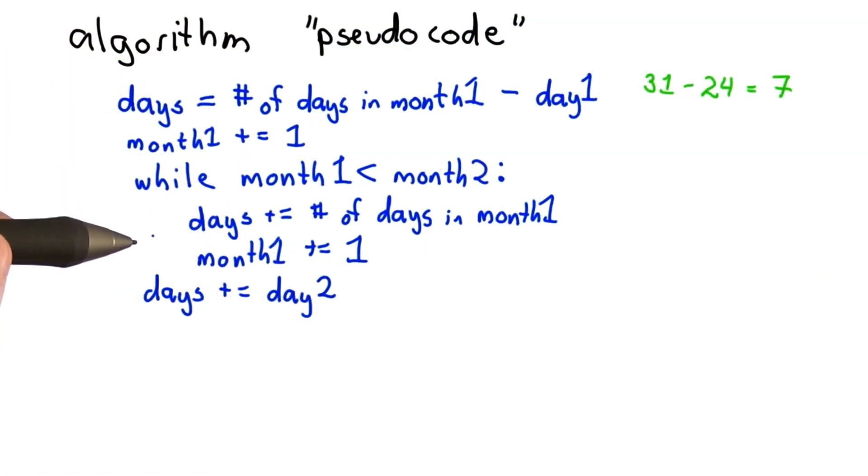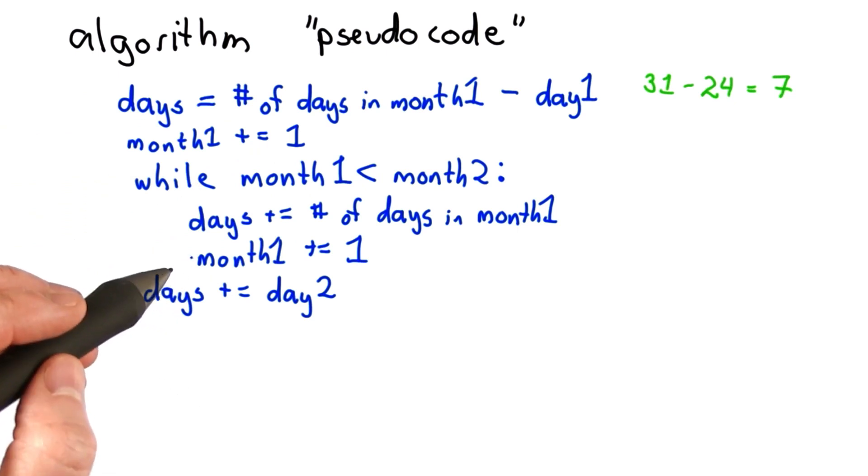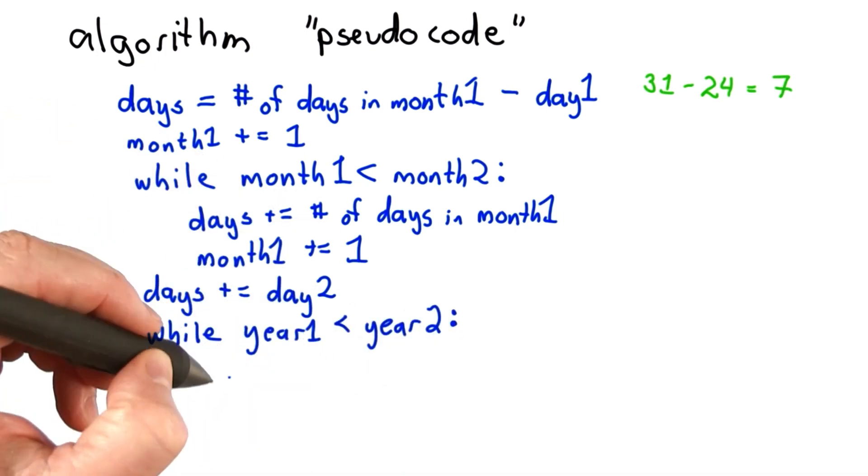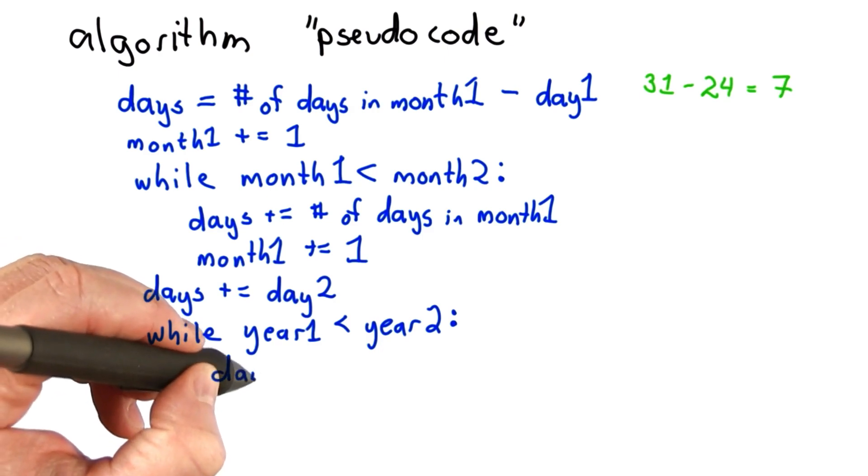We haven't yet accounted for years. For this example, that was okay. But for other cases, we're going to need to account for years. So let's think about how to do that. We can do it similarly to how we accounted for month. While we're not up to the same year, we're going to add the number of days in that year.